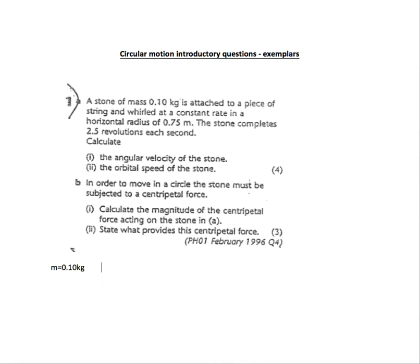Attached to a piece of string, whirled around at a constant rate in a horizontal radius of 0.75 meters. And we have two and a half revolutions every second. So that's two and a half. That's the frequency.